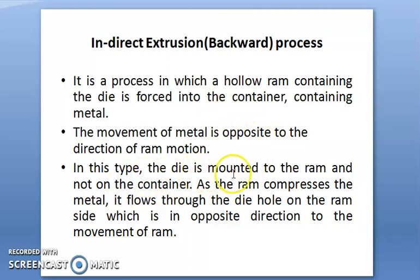In this type, the die is mounted to the ram and not on the container. This is most important. In direct extrusion process, the die is mounted to the container only. But here, the die is mounted to the ram; it is movable. As the ram compresses, the metal flows through the die port on the ram side, which is in opposite direction to the movement of ram.